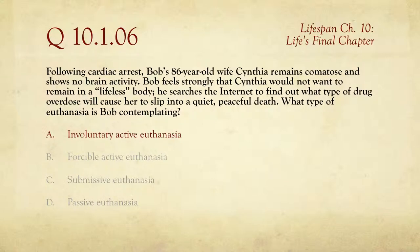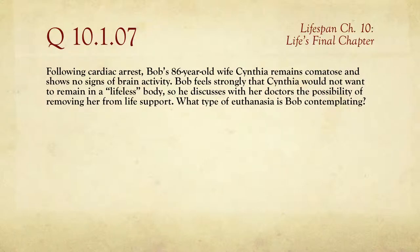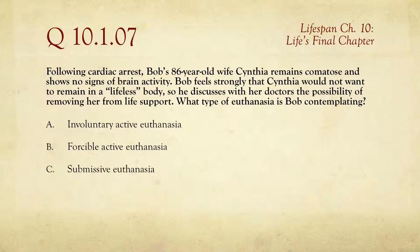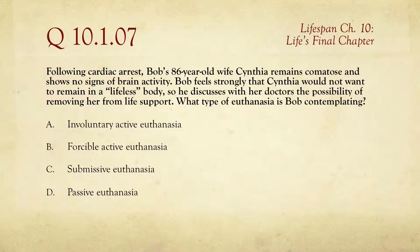Question seven uses the same stem: following cardiac arrest, Bob's 86-year-old wife Cynthia remains comatose and shows no brain activity. Bob feels strongly that Cynthia would not want to remain in a lifeless body. This time, he discusses with her doctors the possibility of removing her from life support. In the last question, he was talking about a drug overdose — adding something to cause death. This time he's talking about removing something, stopping keeping her alive. That is passive euthanasia. B and C — forcible active euthanasia and submissive euthanasia — are made-up terms and not actual choices.